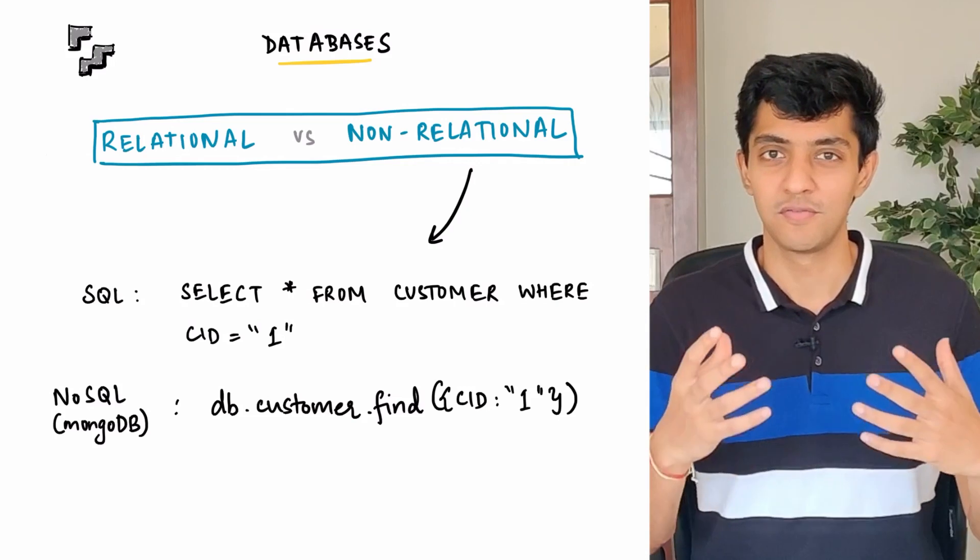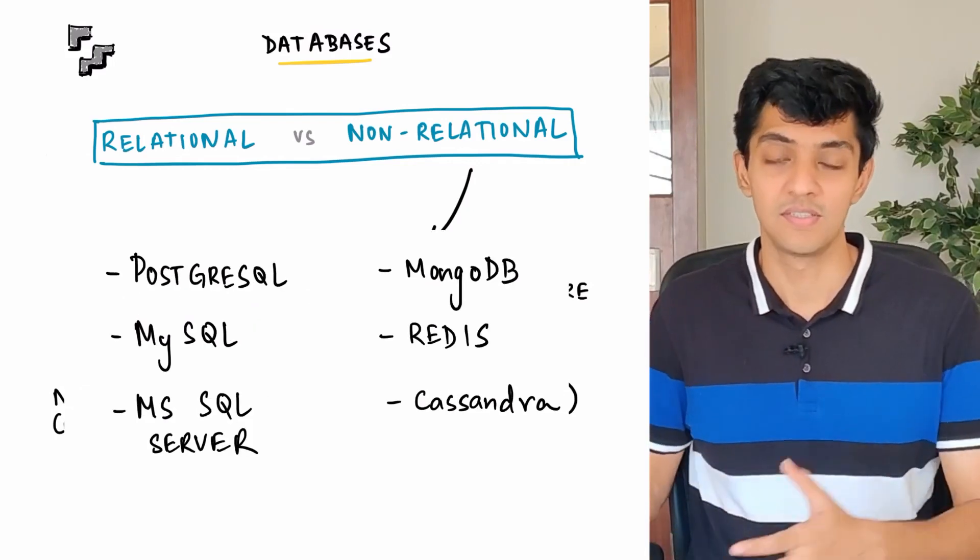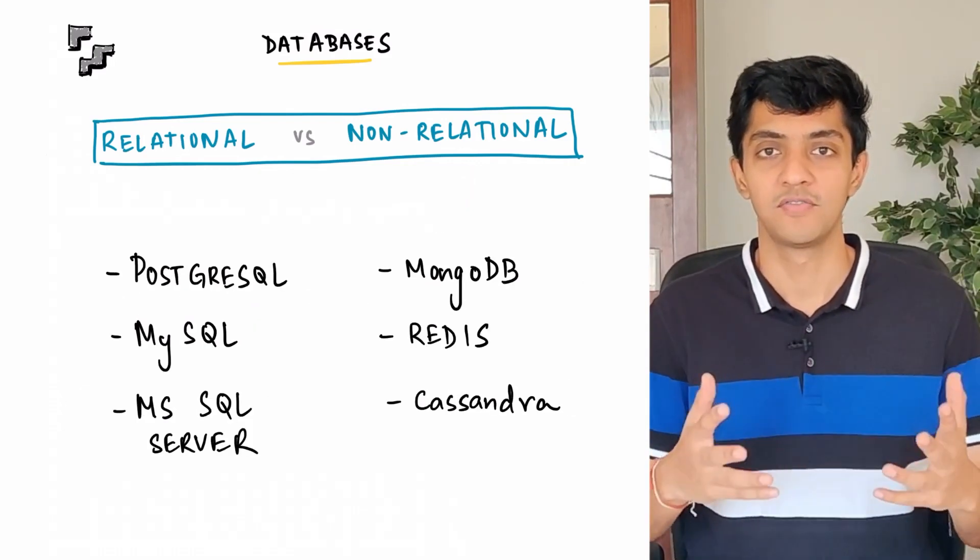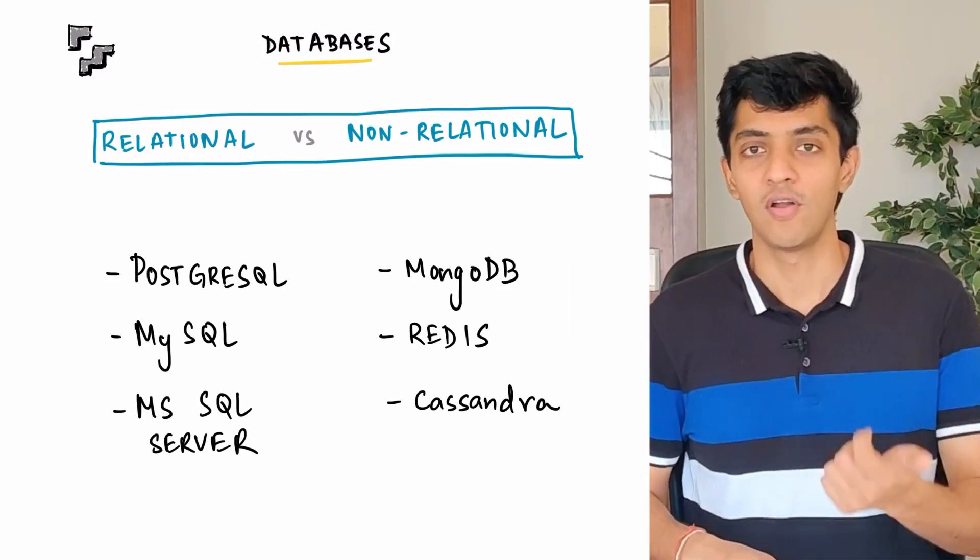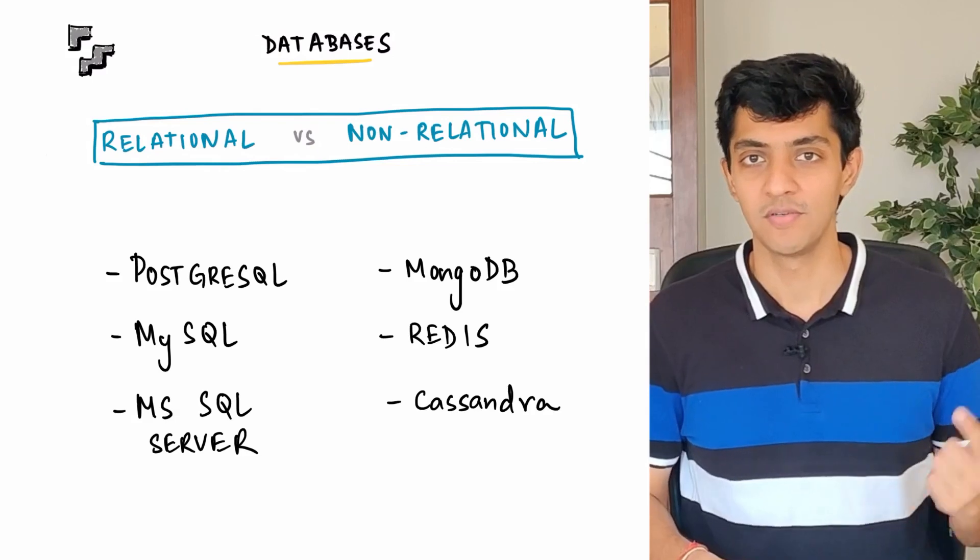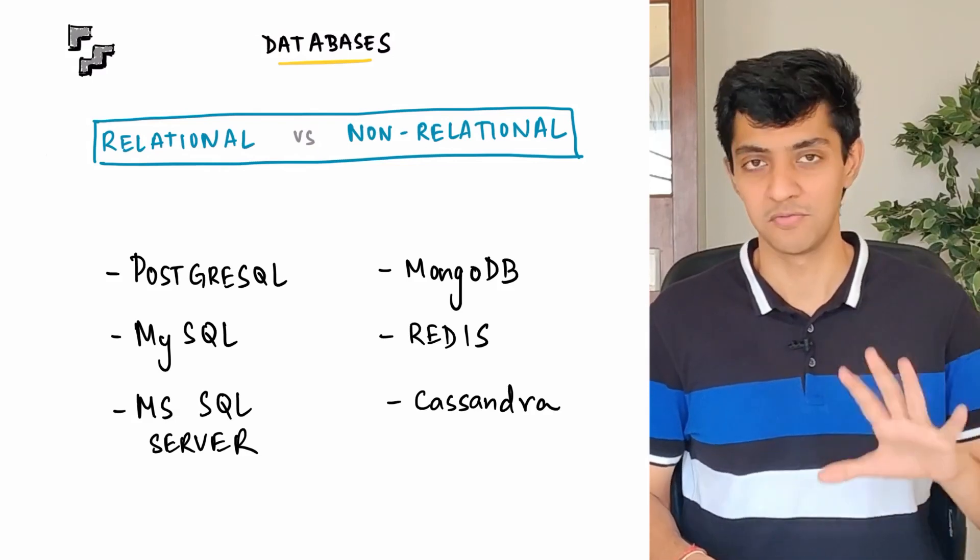Now, lastly, some examples of relational and non-relational database. For relational database, you have PostgreSQL, MySQL, Oracle, and Microsoft SQL Server. And for non-relational database, you've got MongoDB, you've got Cassandra, you've got Redis, and a few others.